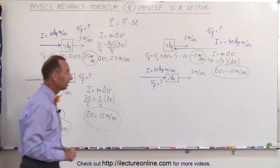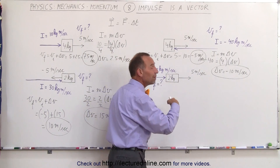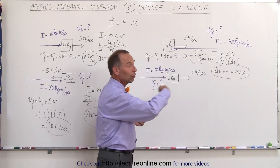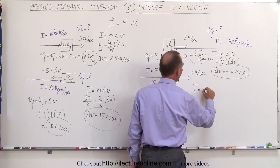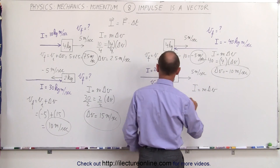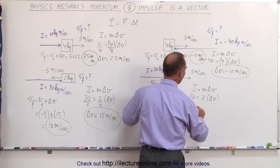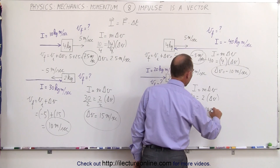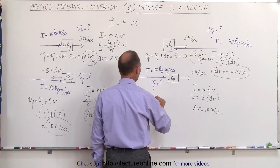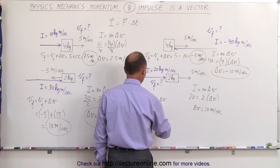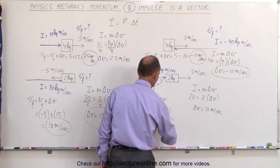For our last example, we have a 2 kilogram object already moving to the right, and a positive impulse of 20 kilogram·meters per second is applied — so the change in velocity will also be positive. The impulse equals mass times change in velocity: 20 equals 2 times the change in velocity, giving a change in velocity of 10 meters per second. So v final equals 5 plus 10, which is positive 15 meters per second.